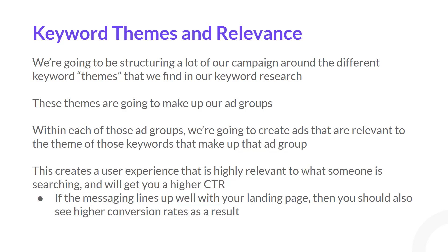What we need to understand before we get into that is keyword themes and relevance. What we're going to be doing is structuring a lot of our campaign around the different keyword themes that we find when we're doing our keyword research. When I say themes, I mean essentially groupings of keywords that are talking about the same thing or have the same intent. Those themes are going to make up our ad groups. Within each one of those ad groups, we're going to create ads that are relevant to the theme of those keywords.